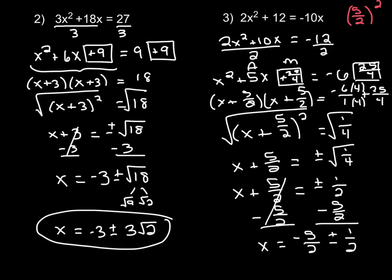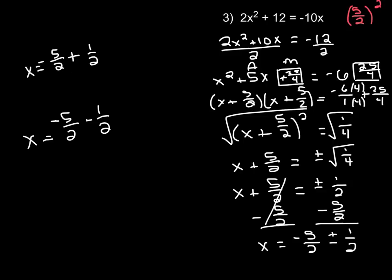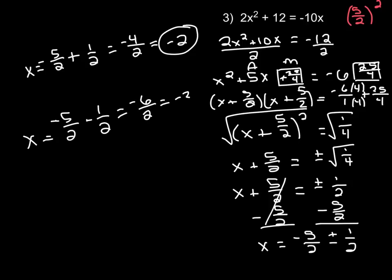Now since we don't have any radicals in our answer — this is just a number and this is just a number — we're going to want to add the 1 half to negative 5 halves, and we're going to want to subtract the 1 half from negative 5 halves. So we have x equals negative 5 halves plus 1 half, and x equals negative 5 halves minus 1 half. For the first one, negative 5 plus 1 is negative 4, and negative 4 divided by 2 is negative 2, so one value is x equals negative 2. For the second one, negative 5 minus 1 is negative 6, and negative 6 divided by 2 is negative 3. So these are our two answers.